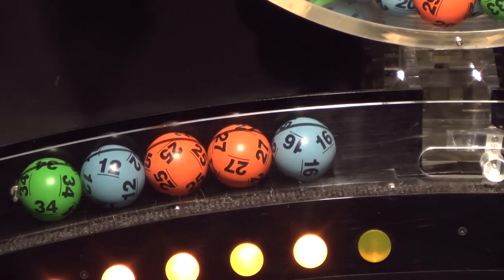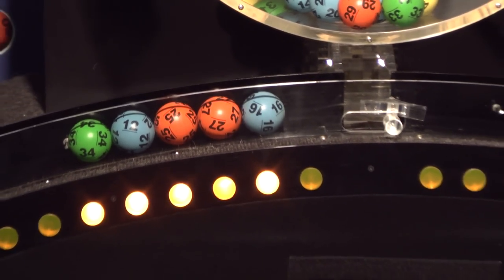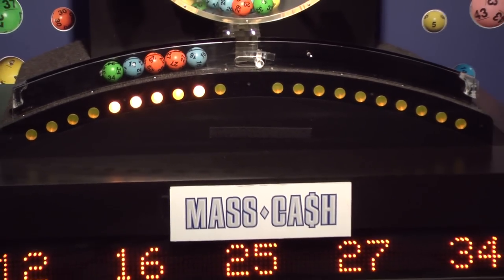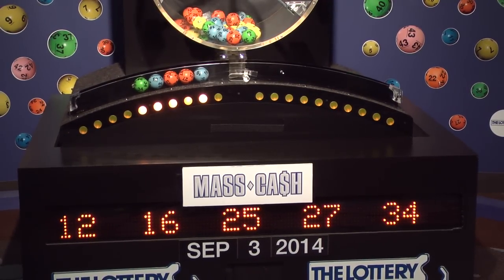Once again the winning MassCash numbers for Wednesday, September 3rd are 12, 16, 25, 27, and 34.